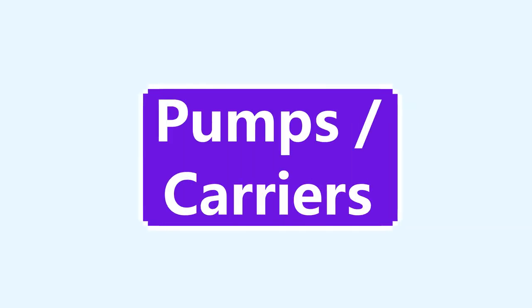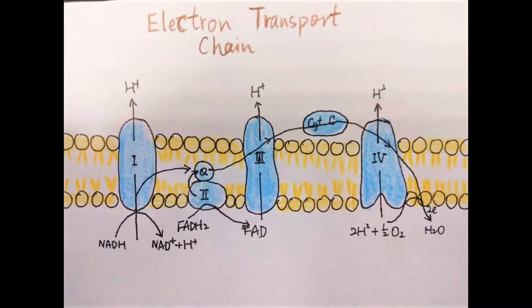Ion carriers are also a part of active transport. They are transmembrane polypeptide molecules. Examples include the sodium-potassium pump and the electron transport chain.